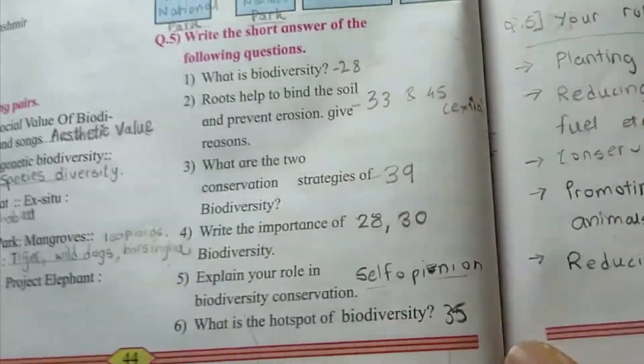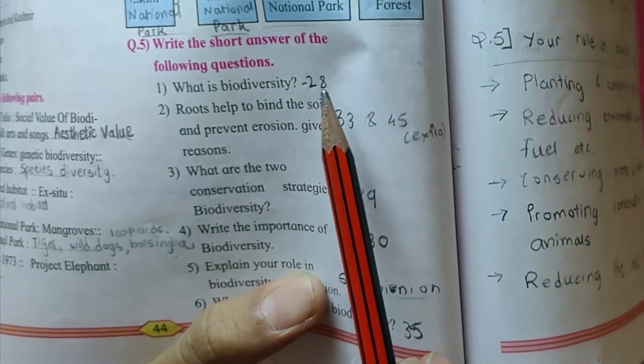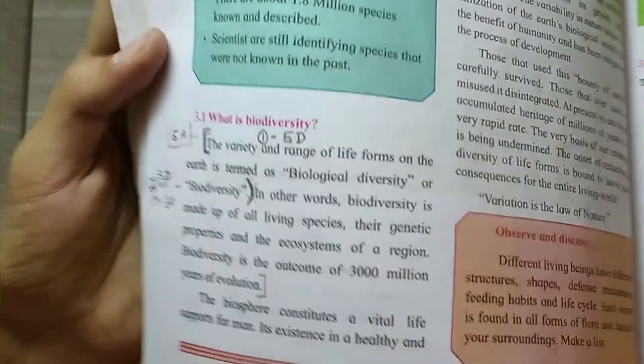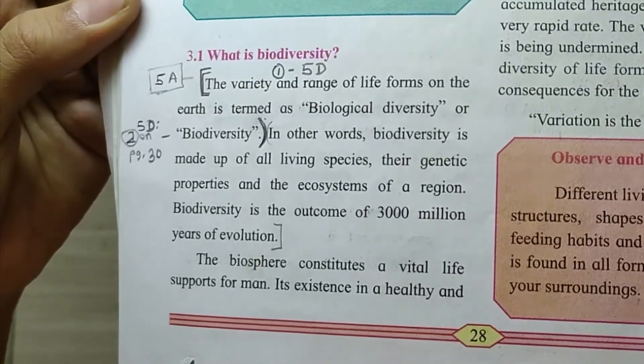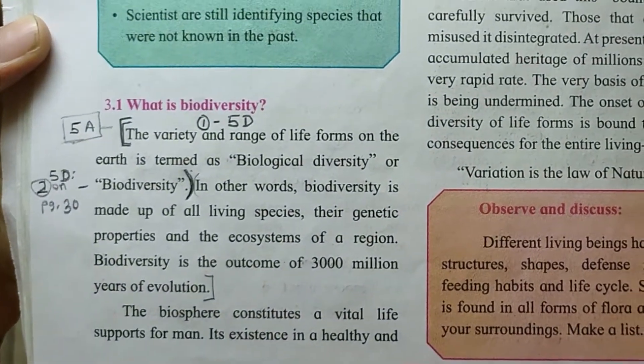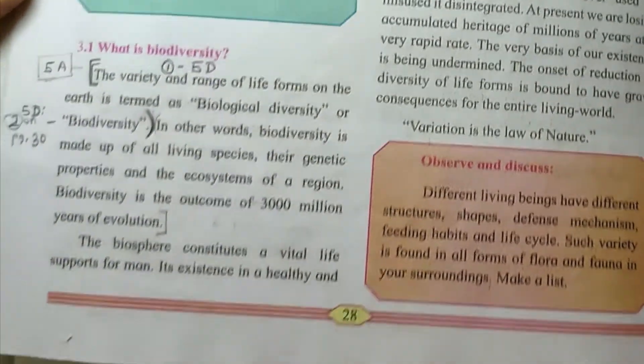Question five, first answer, what is Biodiversity. It is given on page number 28. Here, you can see, the variety and range is the first point, and the whole paragraph is the answer till years of evolution.